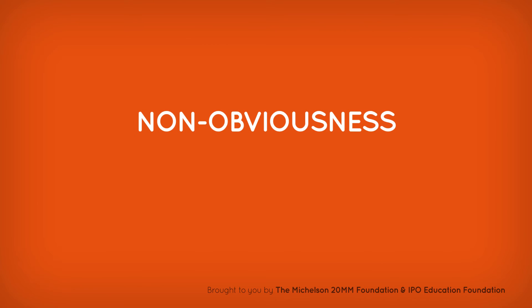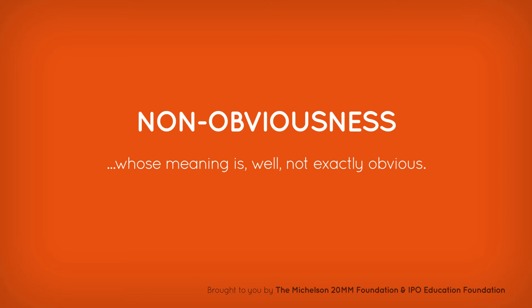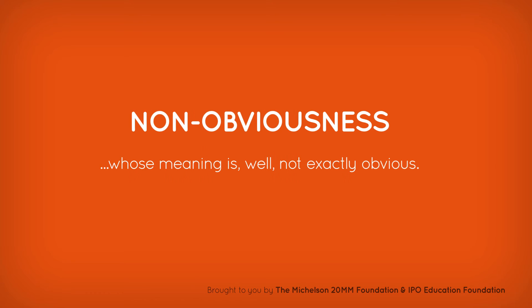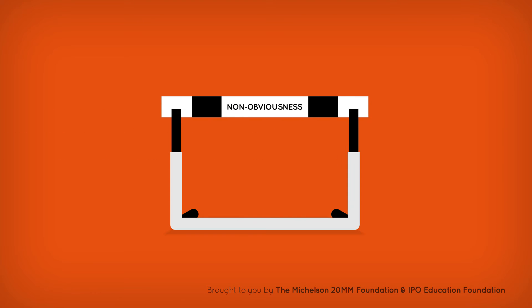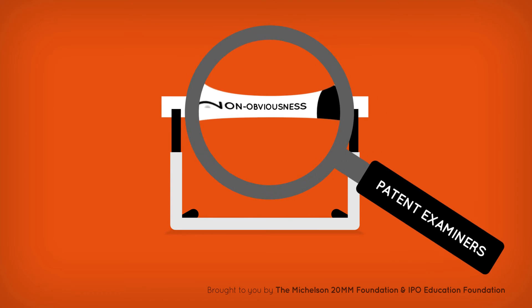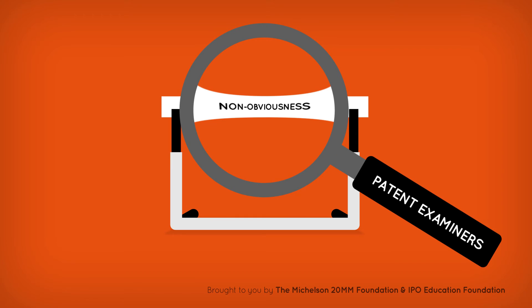The final criteria is non-obviousness, whose meaning is, well, not exactly obvious. This is where inventors face their biggest hurdle with patent examiners.